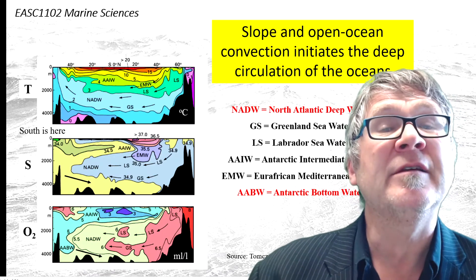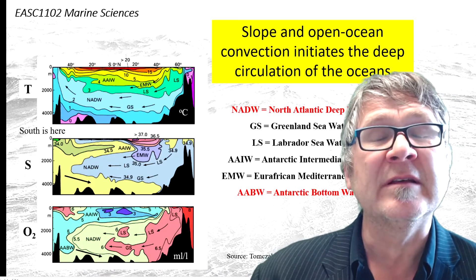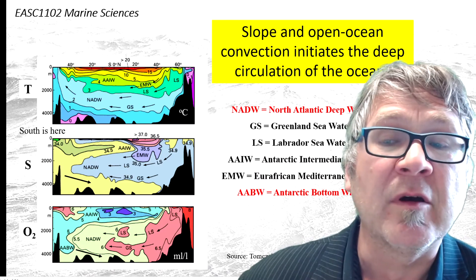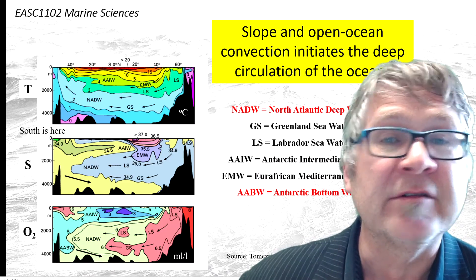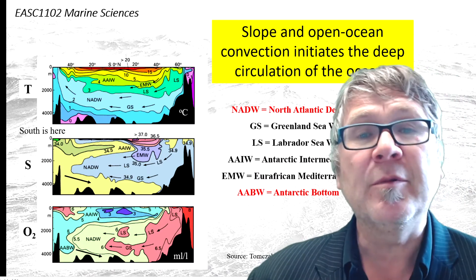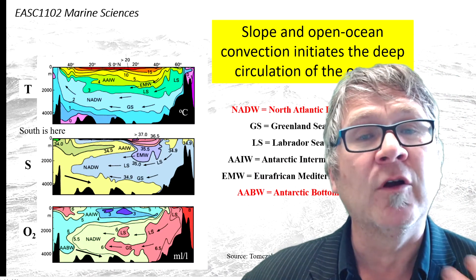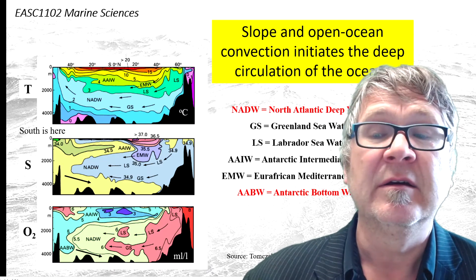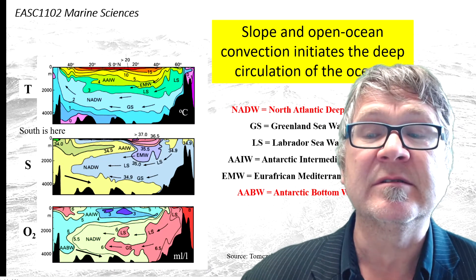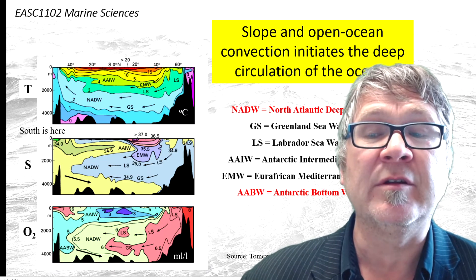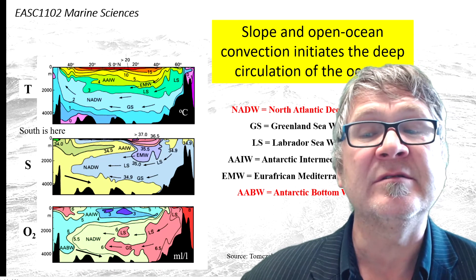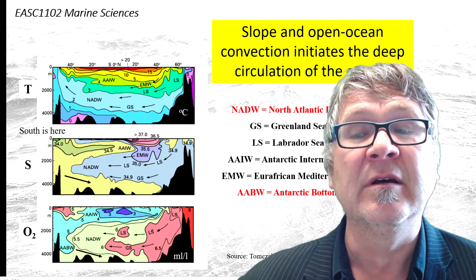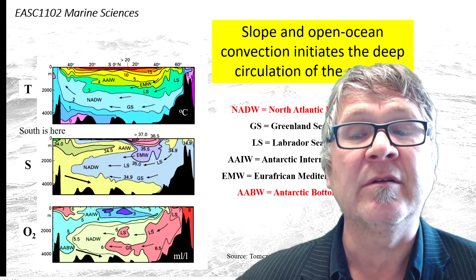You can identify Antarctic Bottom Water — that's most easily identified because you can look at the near-bottom water and follow the temperature trace: zero degrees Celsius, one degree, two degrees Celsius near the bottom. You can see the link to the Antarctic region and the link to the surface.